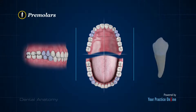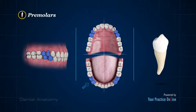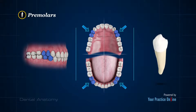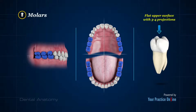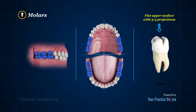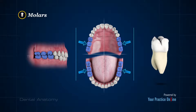Premolars have two projections on their upper surface. There are two premolars present in each quadrant, just after the canines. Molars have a flat upper surface with three to four projections that are used to grind food. There are three molars in each quadrant.